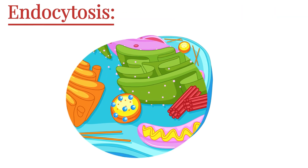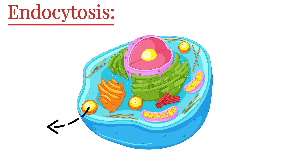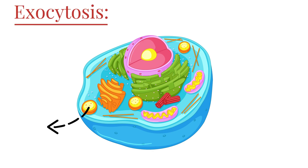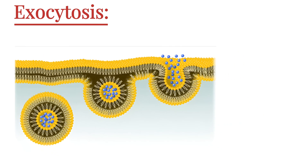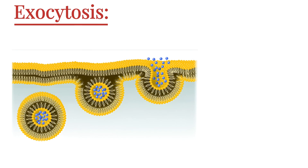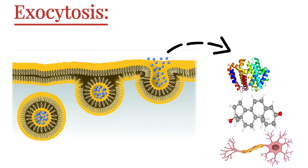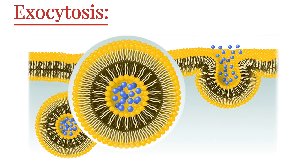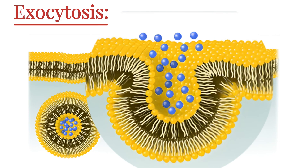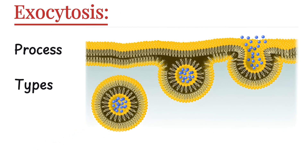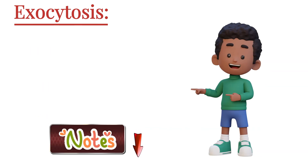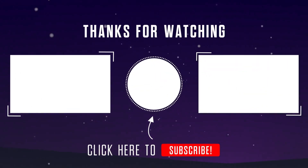Once the cell has used the desired materials, it also needs to remove waste products. For that, it uses the exact opposite process of endocytosis, called exocytosis. Exo means out, and that's exactly what happens. But it's not just for waste — cells also use exocytosis to export essential materials like proteins, hormones, and neurotransmitters. The material to be exported is packed into vesicles, which then fuse with the cell membrane and release their contents outside the cell. If you want to dive deeper into this process, its types, and real-life examples, click on the video linked here. Thanks for watching BioScholar — I'll see you there.